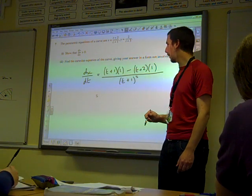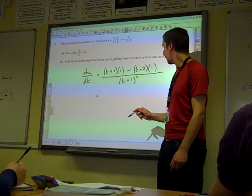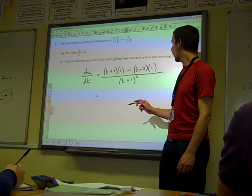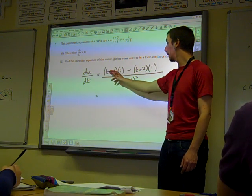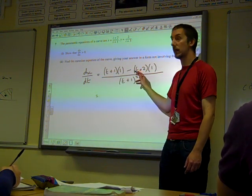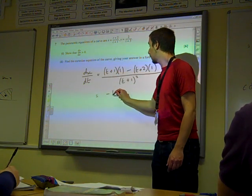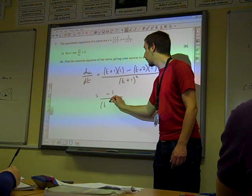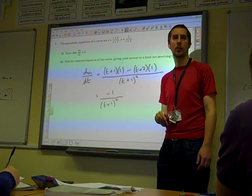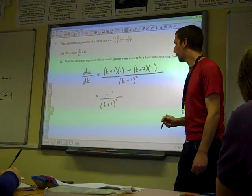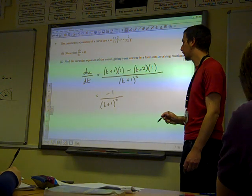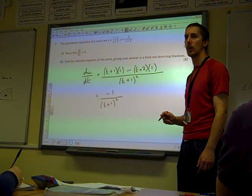So this feels like it needs to be simplified. The top line, whatever we've got, we've got t, take away t, and we've got 1 minus 2. So the top line, I think, comes out as just being minus 1, and the bottom line is t minus 1 squared. Is that alright?